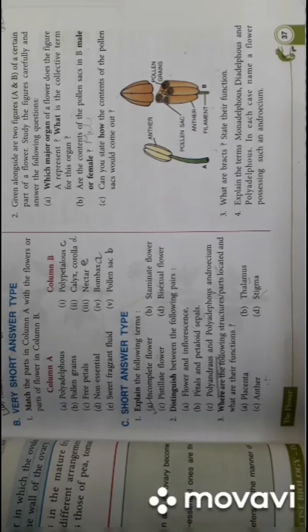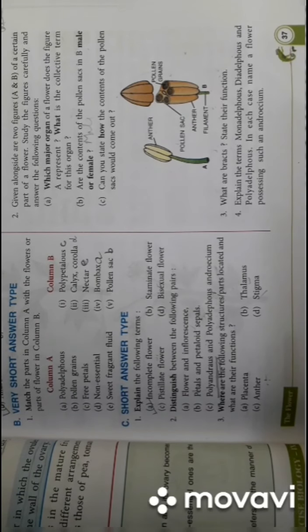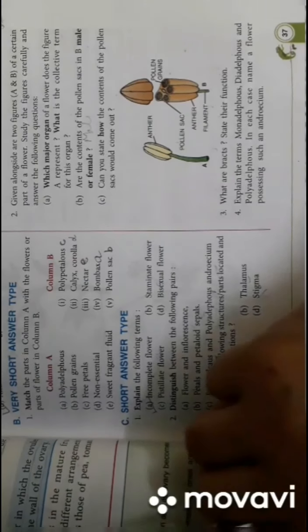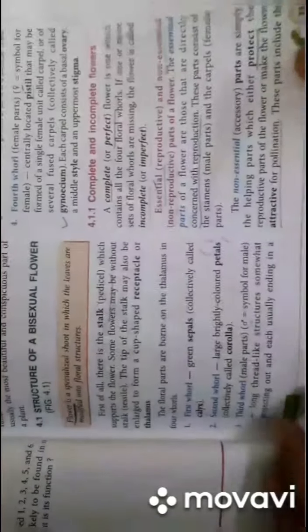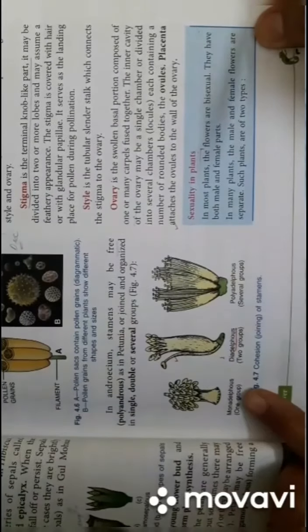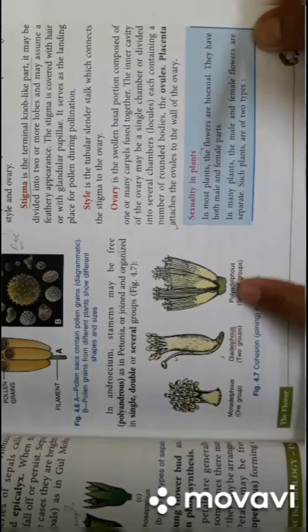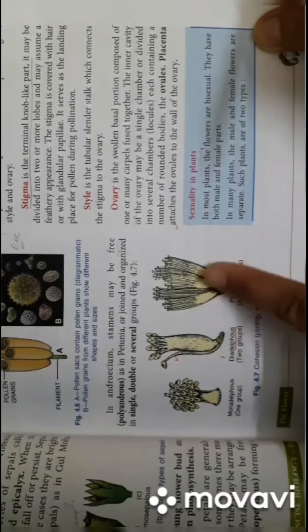Polyandrous and polyadelphous androecium. Polyandrous stamens are free, and polyadelphous stamens are fused or joined in various groups. So you can see once again, this is polyadelphous - they all are joined in various groups. And polyandrous stamens are free, not joined.